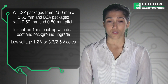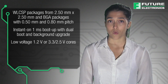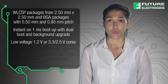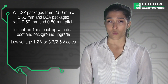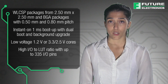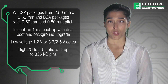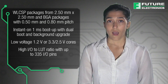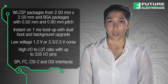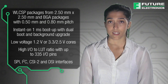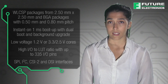Available with low-voltage 1.2V or 3.3V and 2.5V cores. High I/O to LUT ratio with up to 335 I/O pins. Add SPI, I2C, CSI2, and DSI interfaces to legacy designs.